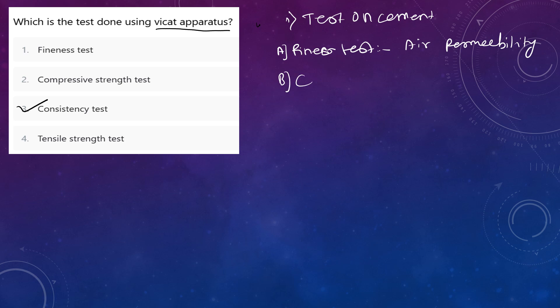Second is consistency. In consistency, we decide the parameter or value of water content to be added in the cement. This test is conducted using the Vicat apparatus.